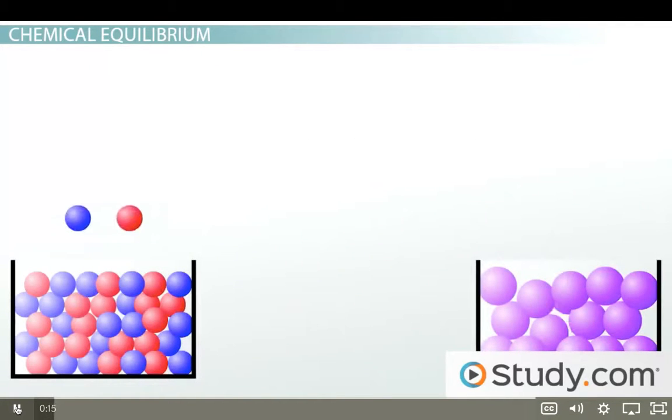Equilibrium is a dynamic state, meaning that things are always moving. Products are being broken down into reactants, and reactants are being combined into products. Things are moving, but the concentrations stay the same.